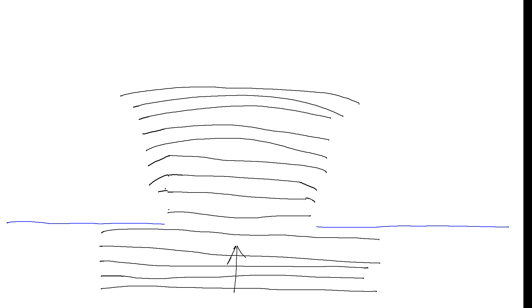At the other extreme, if the gap is much, much smaller than the wavelength, then it acts as though there were no gap in the wall at all — the wave barely gets through, or hardly any of the wave gets through.